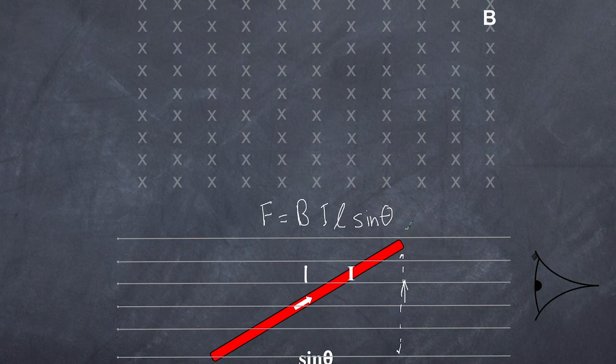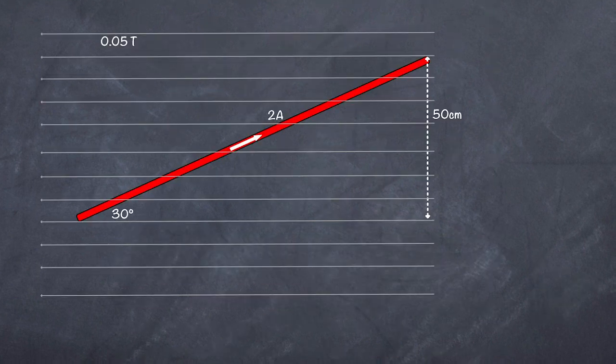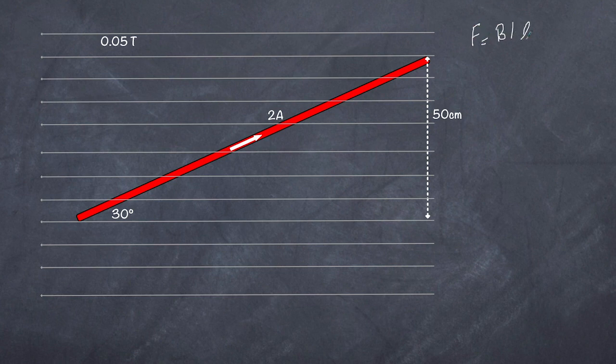So now let's have a quick look at a question and see this in action. Well, the formula of course is F equals B I L sine theta. If you look very carefully, this is no longer perpendicular to the magnetic field, but we do get some force because there is a component that is definitely perpendicular to the magnetic field.